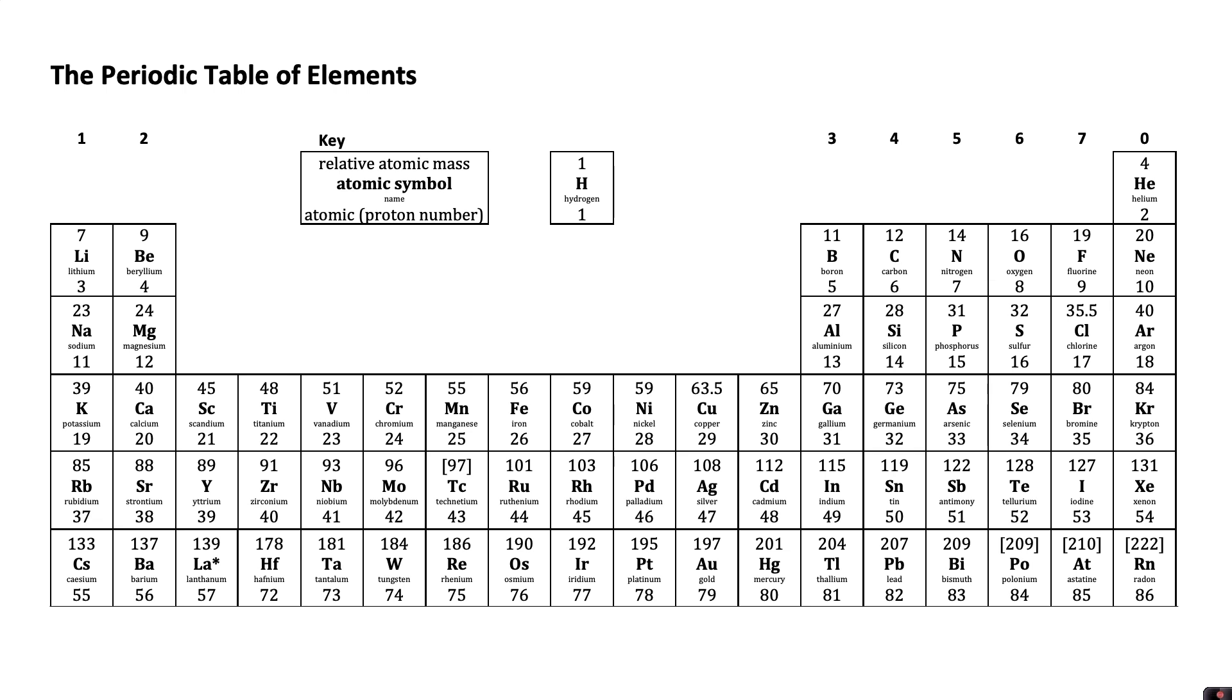In this video we're going to look at the basic structure of the periodic table of elements. There are around a hundred atoms that make up everything on earth and the different types of atoms are called elements.